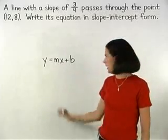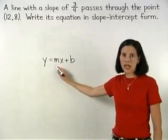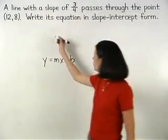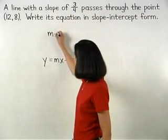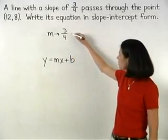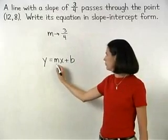To find the value of m, remember that m represents slope, and we're given that the slope of the line is three-fourths. So we know that the value of m is three-fourths, which means that we can substitute three-fourths x into our formula for m.